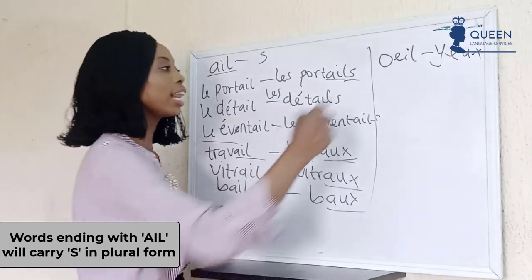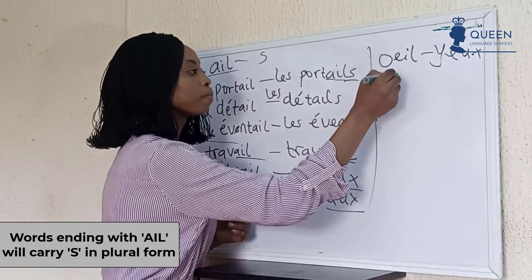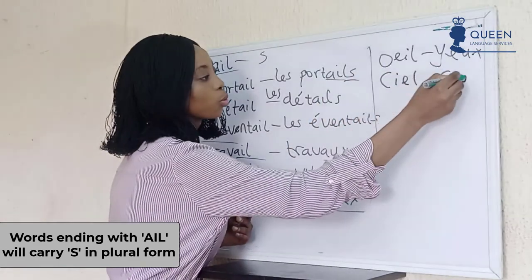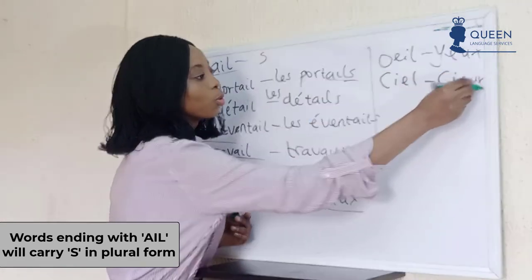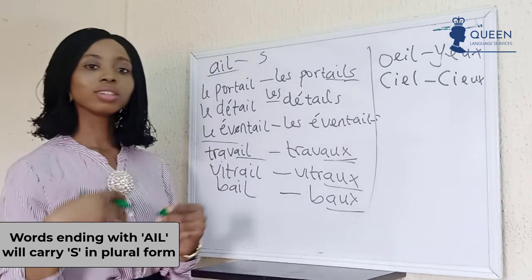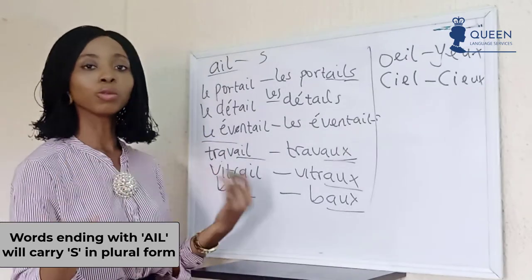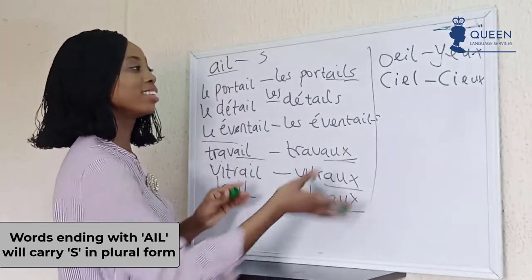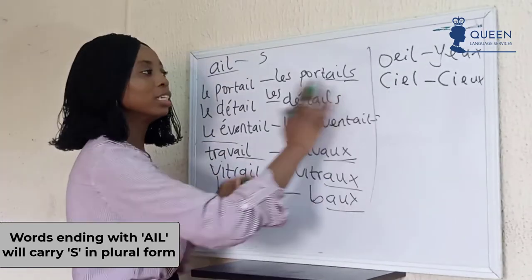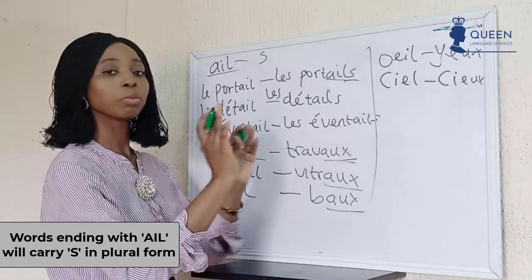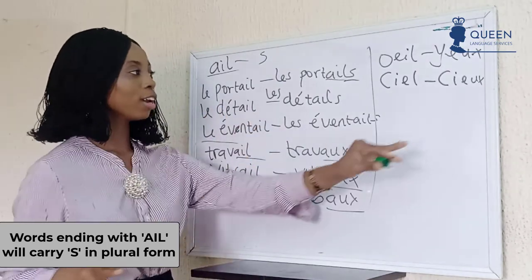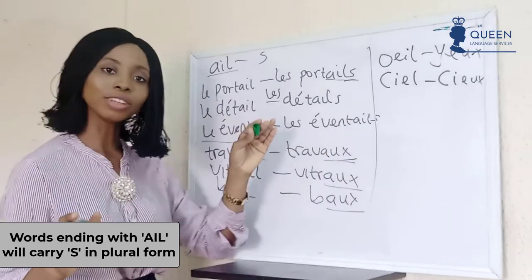In words like 'ciel,' we have 'cieux.' These are examples of words where naturally in the singular form it is different and in the plural form it is different — there's no regular pattern for it.